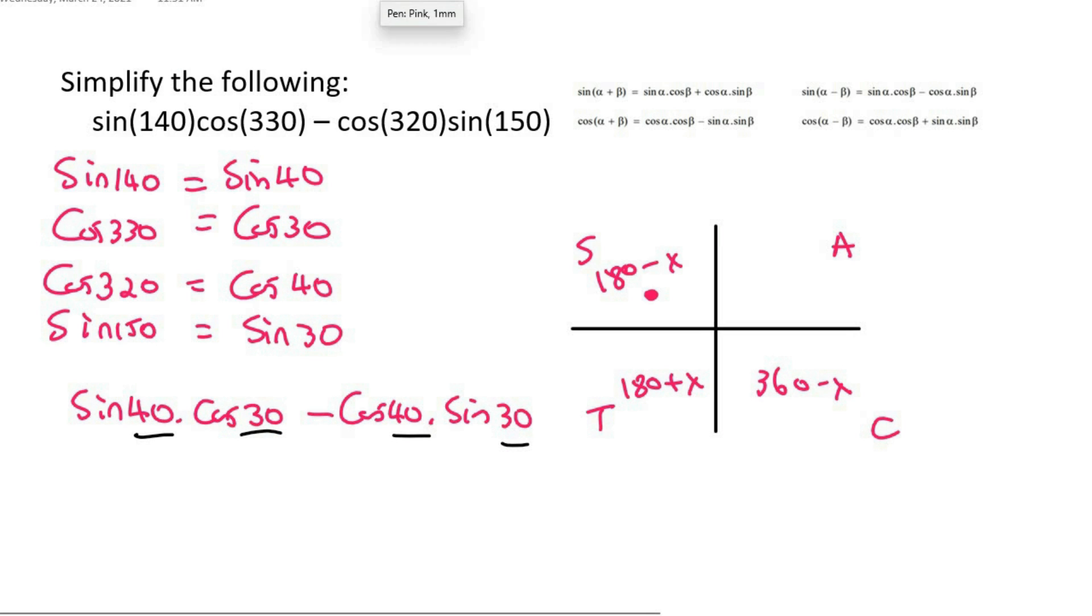And it's a sin cos minus a cos sin. So that's going to be this one over here. And so I can rewrite it then as sin of the first angle, which is 40, minus the second angle, which is 30.